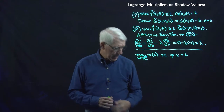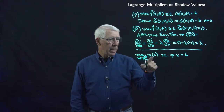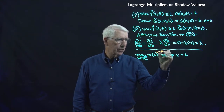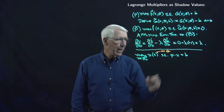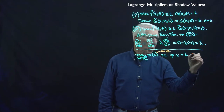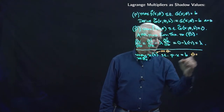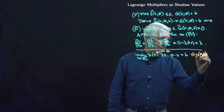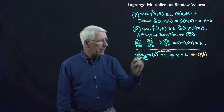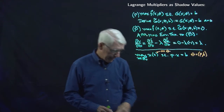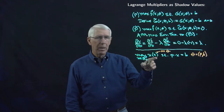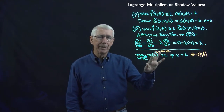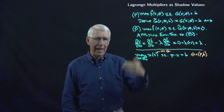Something worth noting here is that the parameters don't actually show up in the objective function. The parameters — theta in this problem — would be the vector of prices and the right-hand side budget b, but those don't appear in the utility function. That's okay; another way to think of it is that the objective function is independent of those parameters.